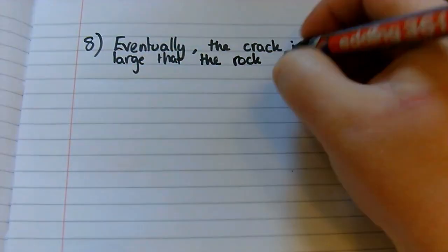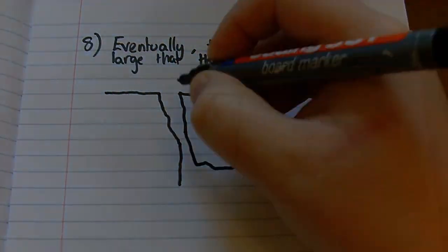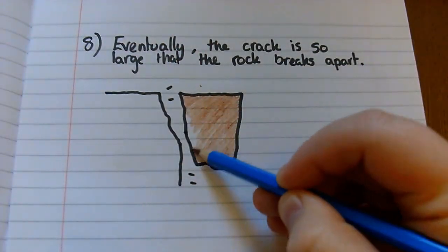Eventually the cracks in the rock get so large that the glacier is able to pluck the rock from the ground. And that's freeze-thaw weathering.